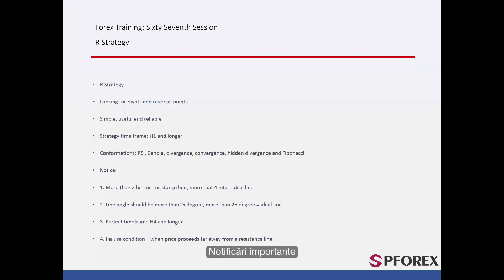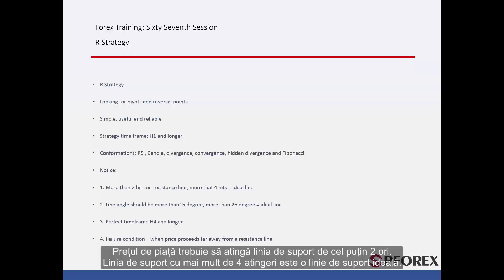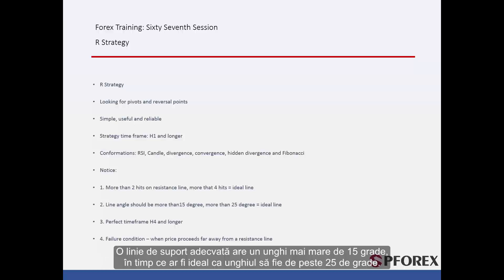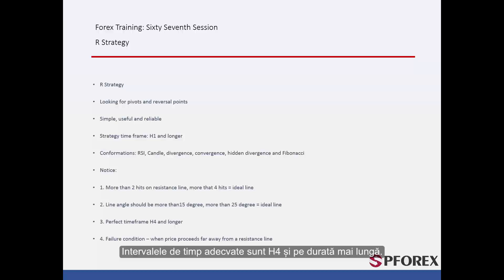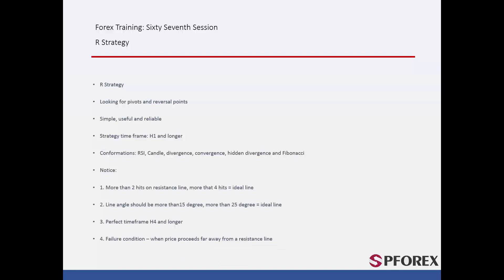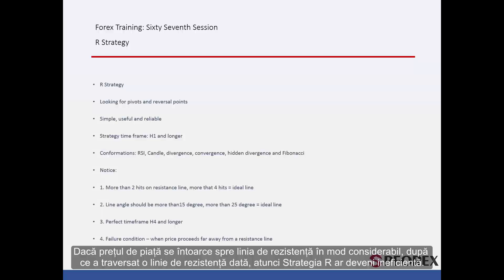Remarkable Notifications: A trader must consider the following aspects. Market price must touch the support line at least twice. A support line with more than 4 hits is an ideal support line. A suitable support line has an angle greater than 15 degrees, while it would be ideal if the angle was over 25 degrees. Appropriate timeframes are H4 and longer. If the market price returns considerably towards the resistance line after crossing it, the R strategy would become ineffective.